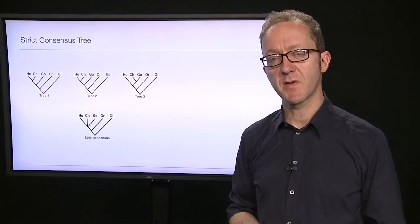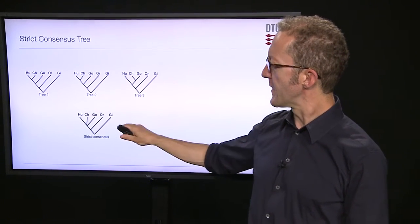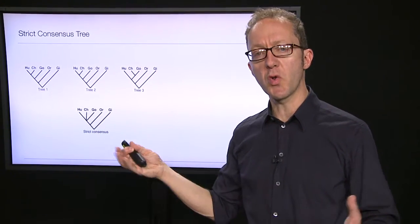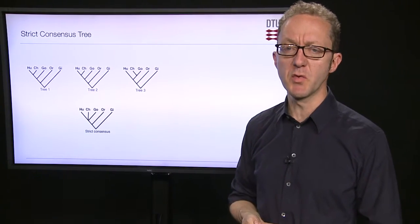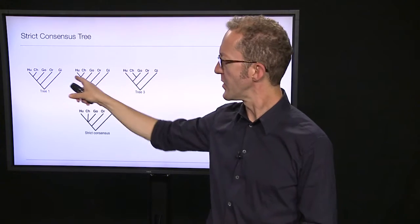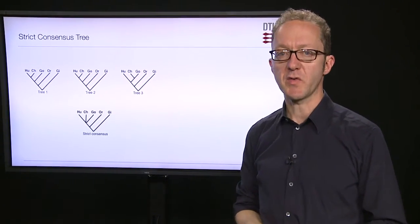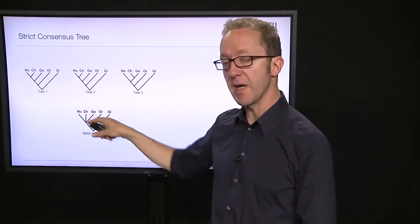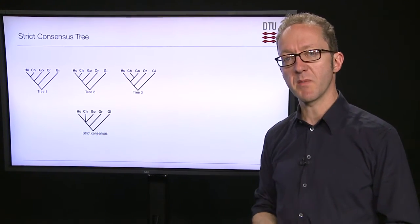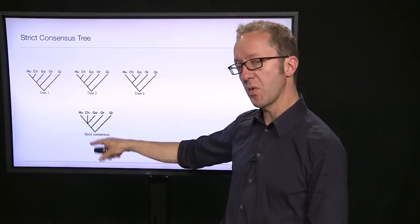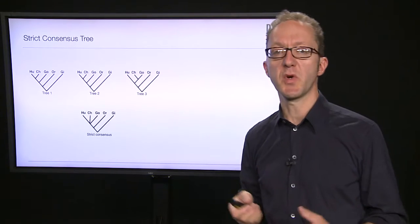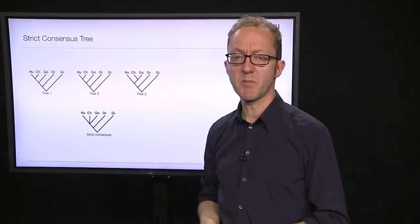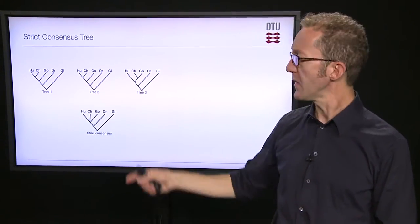How would we summarize that in a strict consensus tree? The strict consensus represents only the things in common between all the input trees. What's in common? Human, chimp, and gorilla together form a clade — a monophyletic group. There's disagreement about whether chimp is closer to human or gorilla, but all three trees agree that human, chimp, and gorilla form a group outside of orangutan and gibbon. So in the strict consensus, the result is a polytomy — more than two branches from an internal node — including human, chimp, and gorilla. But you could argue there's information we're not using: two of the three input trees agree that chimp is more closely related to human than to gorilla.